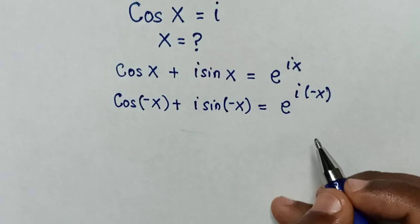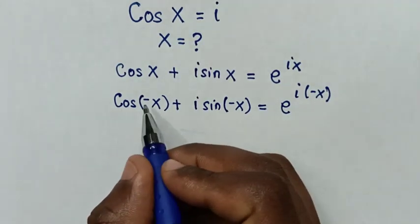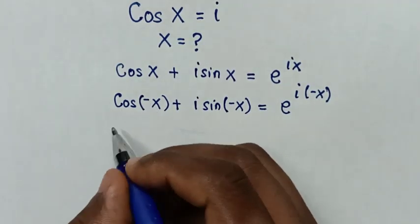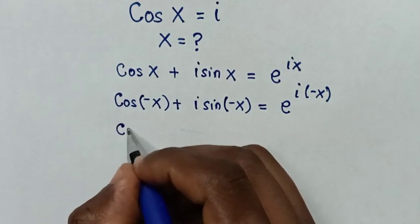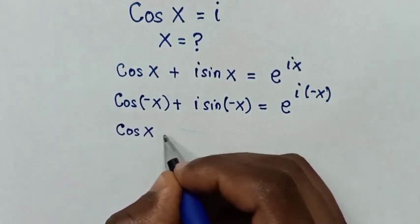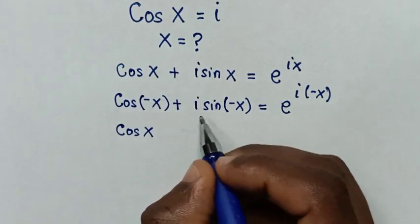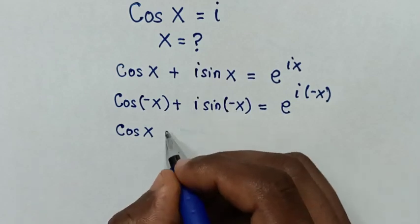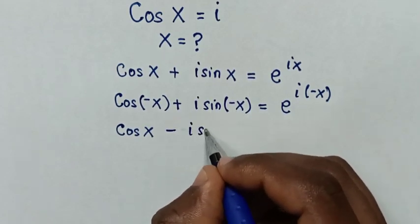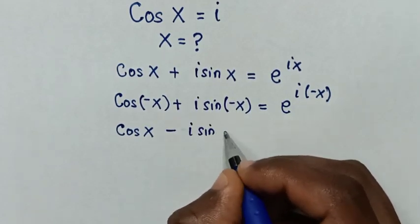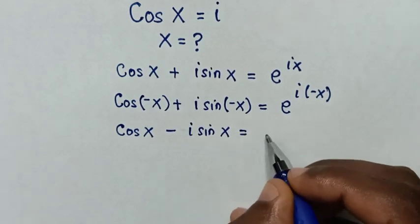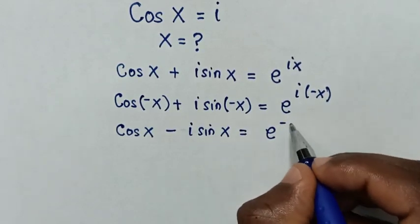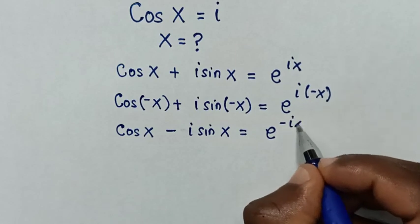Then in the next step, from here cos of negative x is an even function, so this can be cos of x. Then in here, sine is an odd function, so the negative will move outside. So it will be negative i sine of x, is equal to e to the power of negative ix.